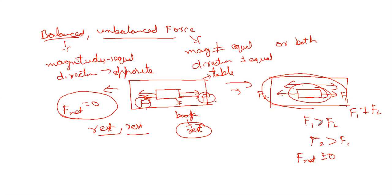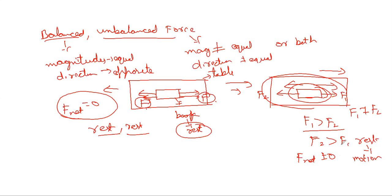If there is some force on the book, what will happen? It will change its state. At present it is in the state of rest. Now because of the application of a net force, the book which is at rest will start moving — that is, it will go to the state of motion. If F1 is greater than F2, it moves in this direction; if F2 is greater than F1, it moves in this direction.